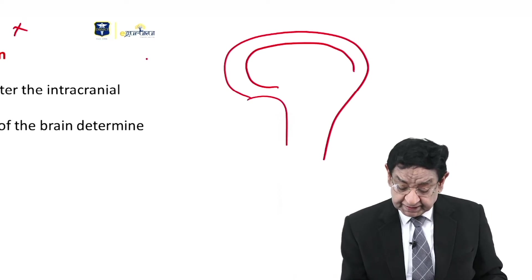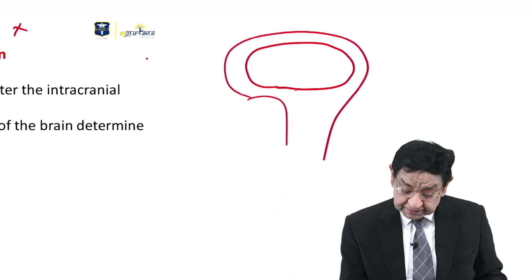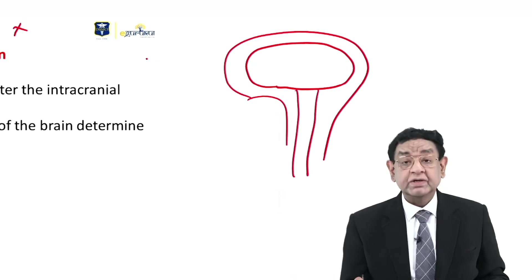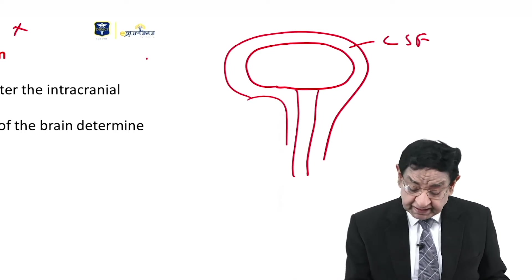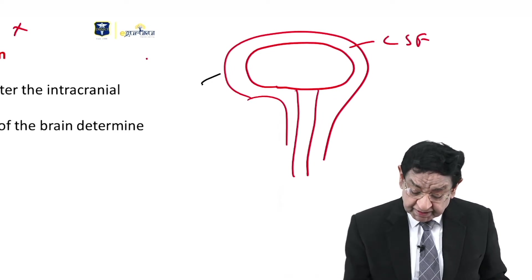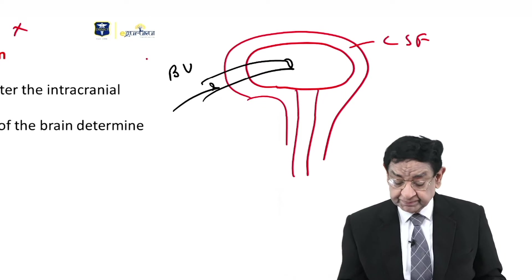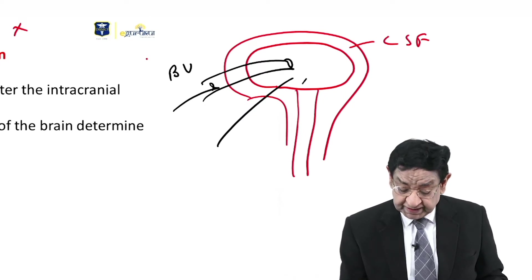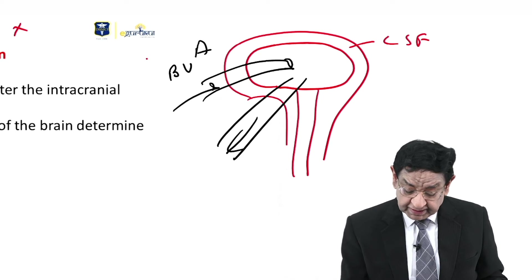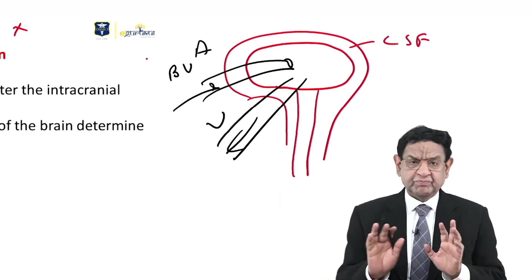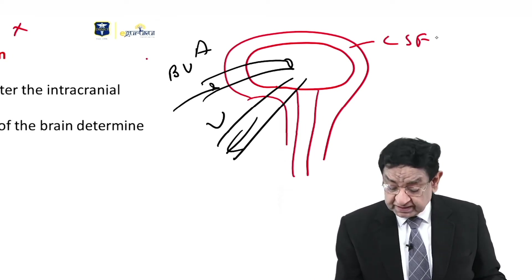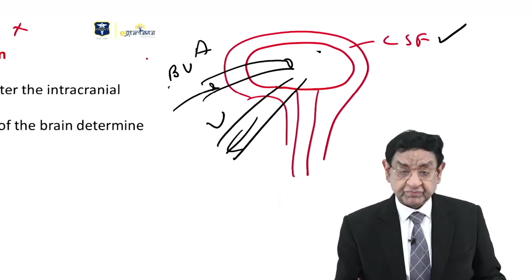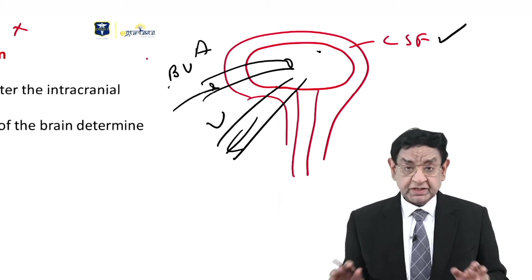If we draw a simple diagram: this is the brain, this is the spinal cord, and this is where the CSF flows. This is the brain parenchyma, and within the brain parenchyma we can draw a blood vessel also. This is the blood vessel supplying blood — artery going in and vein coming out — brain parenchyma. Most simplified.